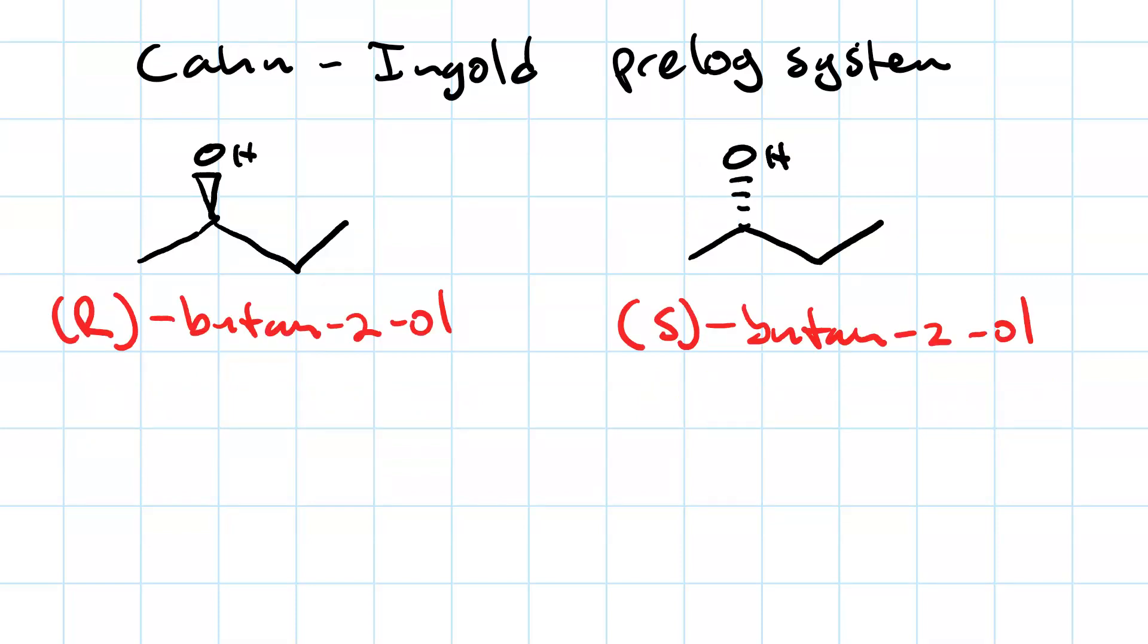The steps for assigning a chirality center as being R or S. First, you want to prioritize the groups. And since there are four groups, you're going to prioritize them A through D. A is highest, then B, then C, then D, which is the lowest priority. And how do we prioritize? We go by atomic number.